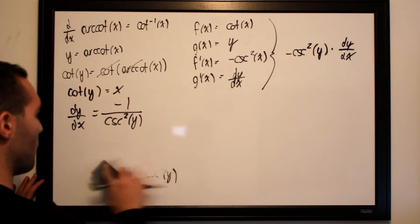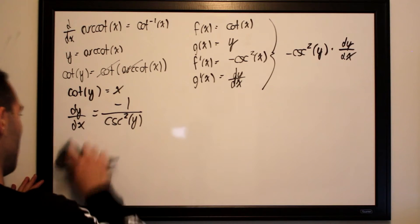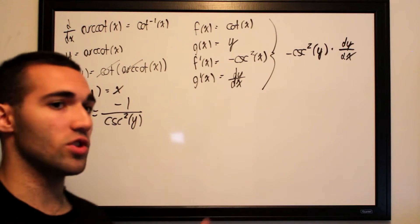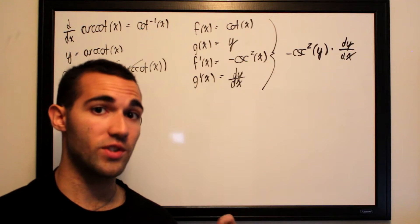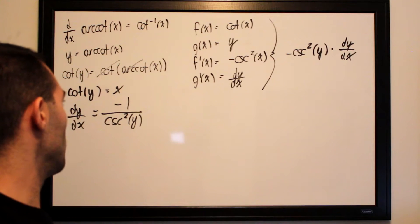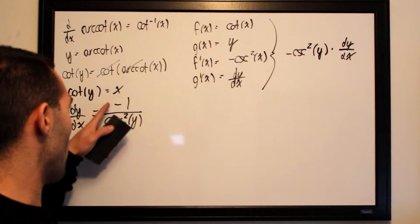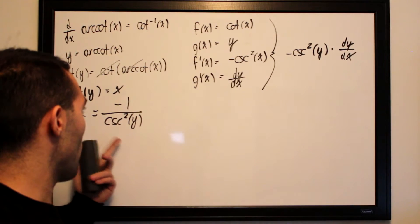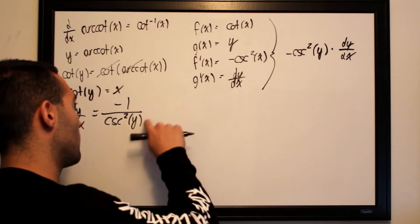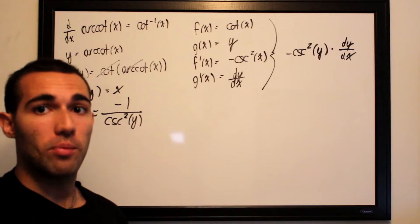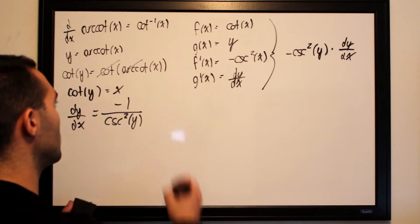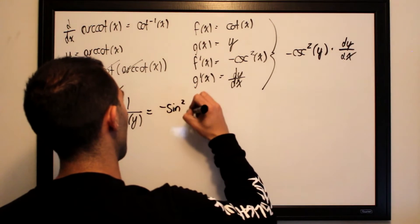We can clean this up further by using more elementary trigonometric functions, since cosecant is just 1 over sine. Because cosecant squared of y is 1 over sine squared of y, we can flip sine up into the numerator, so negative 1 over cosecant squared of y becomes negative sine squared of y.